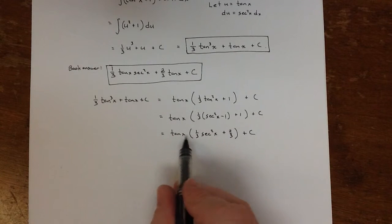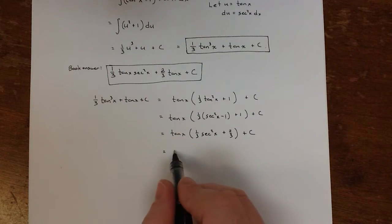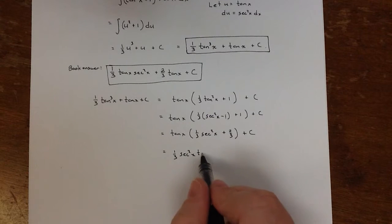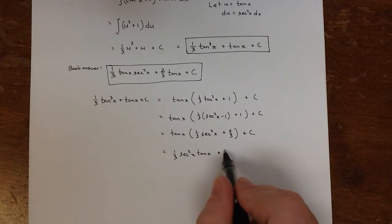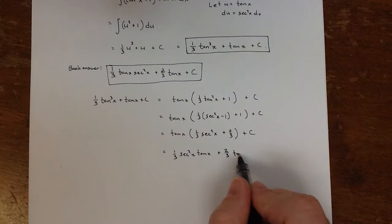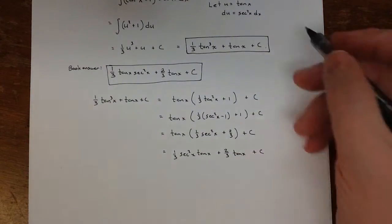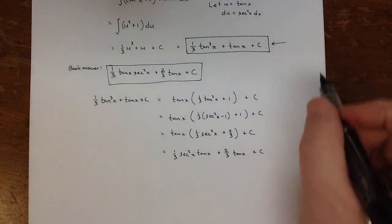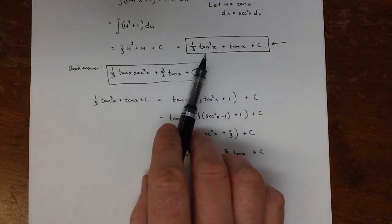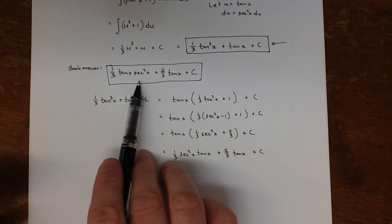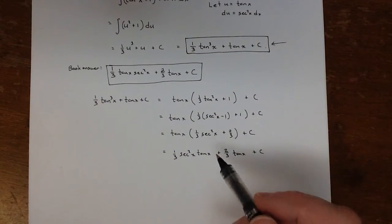And then if you distribute the tan through, you get 1/3 secant squared x tan x plus 2/3 tan x plus c, which is what they got for the book answer. Now personally, I think my answer looks nicer because it just has a tan and a tan. This one has a tan, a tan, and a secant squared. But they're both right.